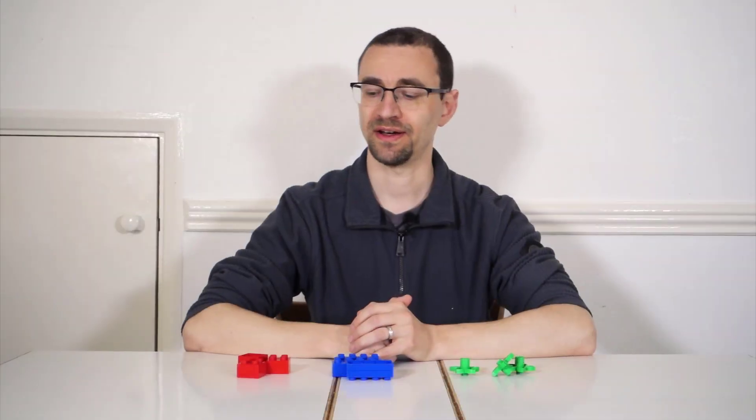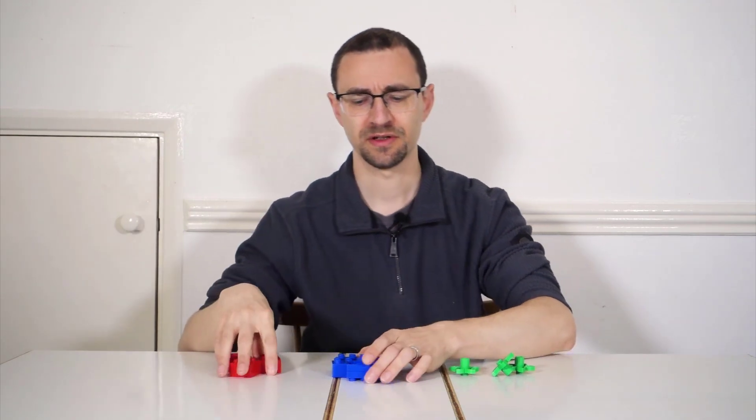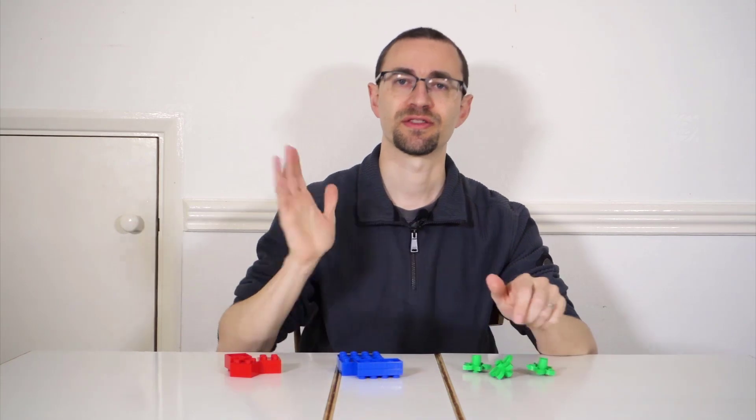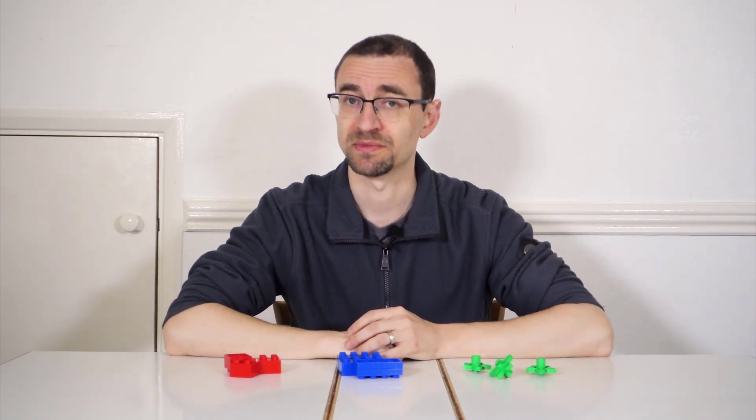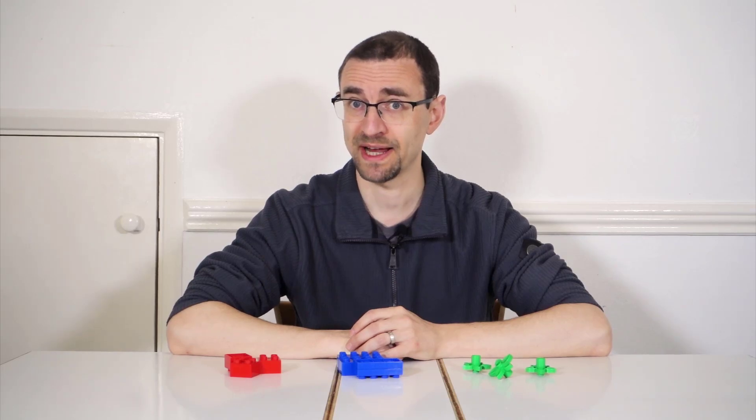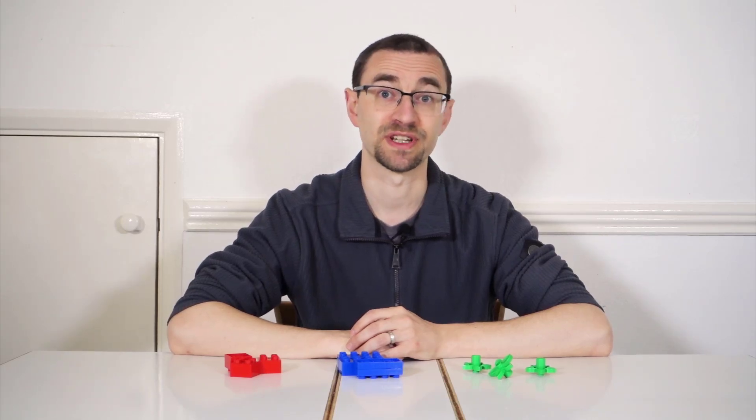On my table here, I have red cubes, blue cuboids, and green star-shaped things. Three different colors, three different shapes. So if I'm searching for a given color, I'll get a third of the bricks back. Same applies if I look for a given shape.